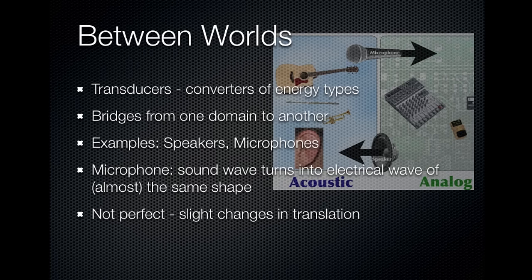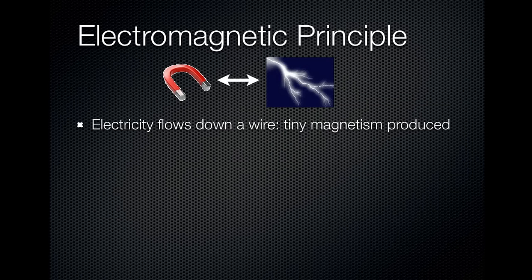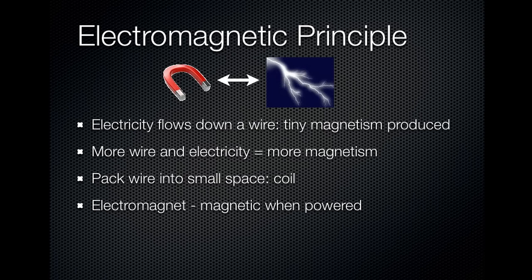The types of speakers and microphones we'll look at today operate on the electromagnetic principle, which is that whenever electricity flows down a wire, a little bit of magnetism is produced. If you have more wire and more electricity, that makes more magnetism. The most common way to pack a whole bunch of wire into a small space is to make a coil — we usually call this an electromagnet. Whenever you run electricity through an electromagnet it becomes magnetic, and if you reverse the polarity — the plus and minus of the electricity — it becomes magnetic in the opposite polarity, with the north and south poles reversed.